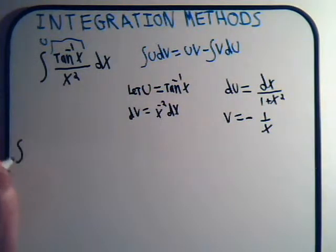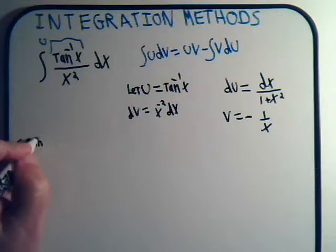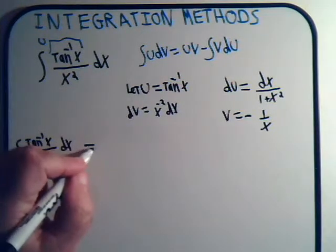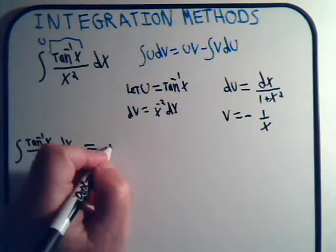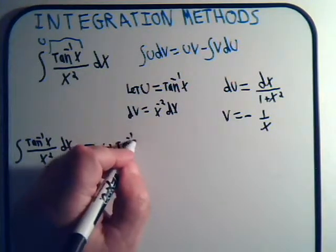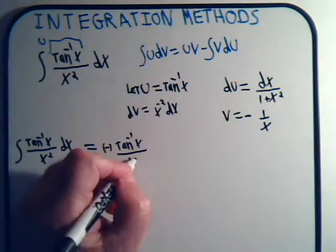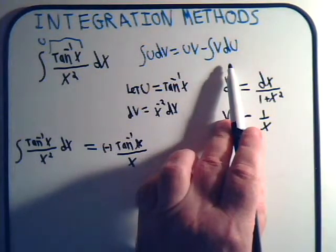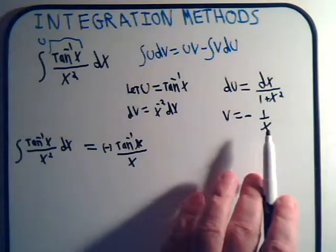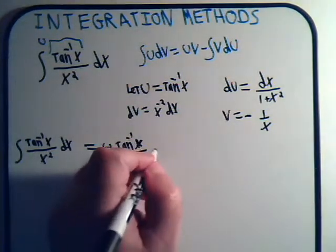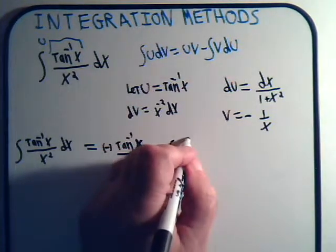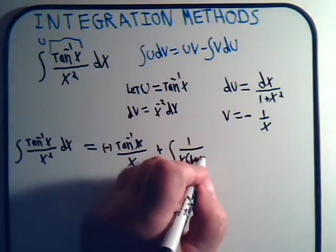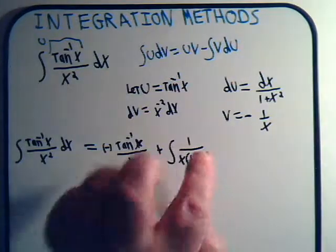So our integral here equals u times v. This times this. We'll have minus inverse tangent of x divided by x. Now we're going to get the integral of v du. And is this something that we're going to be able to integrate? So we have this and this. Minus sign here. So that'll make it plus the integral of 1 over x times 1 plus x squared dx.